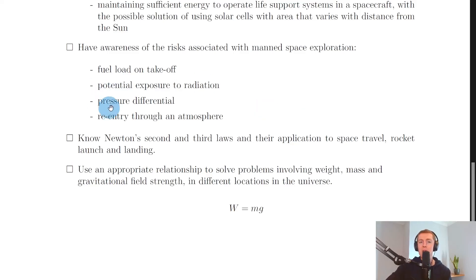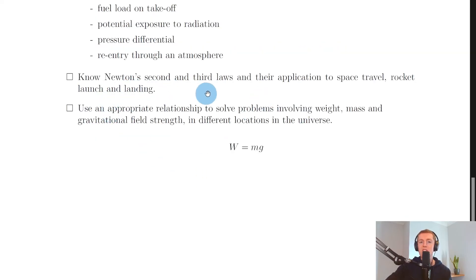Another risk would be pressure differential and temperature—so the extreme differences in temperatures and pressures are what we need to be mindful of when sending humans into space. And lastly, we have re-entry through an atmosphere. So remember, spacecraft need heat shielding materials or heatproof tiles in order to prevent them from burning up on re-entry.